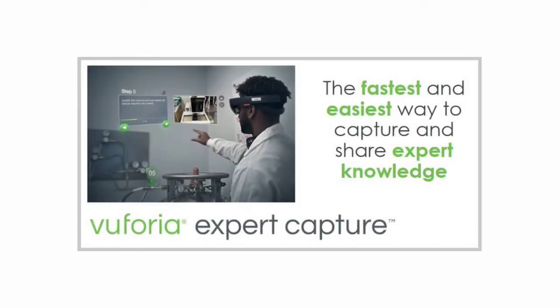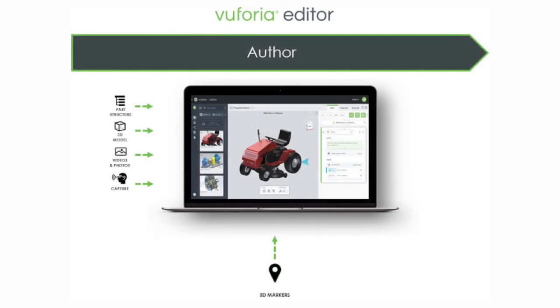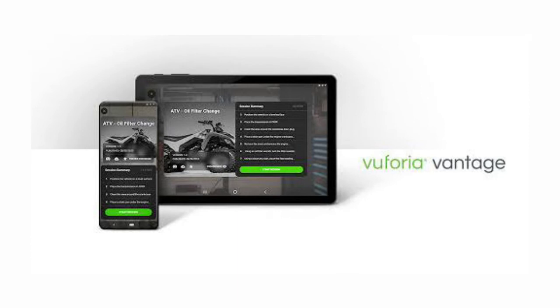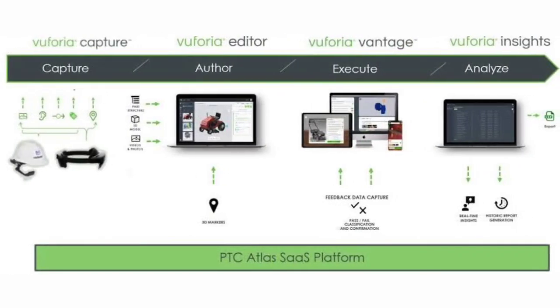There are some other products as well, such as Euphoria Expert Capture, using which we can capture a procedure using a HoloLens device — we can make video recordings and click pictures. Then we have Euphoria Editor, which is the authoring tool wherein we do all the editing and create our AR experiences; we can add text and much more. Then we have Euphoria Vantage, an application using which we can actually view the procedure we have created. And then we have Euphoria Insights, which is basically an analyzer tool.